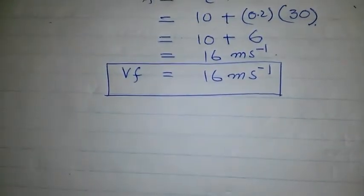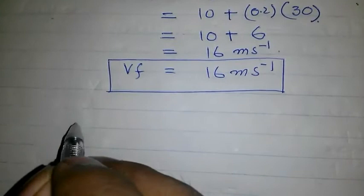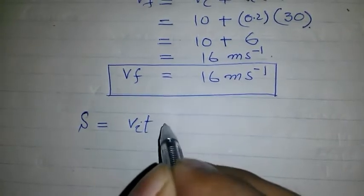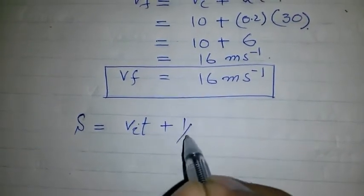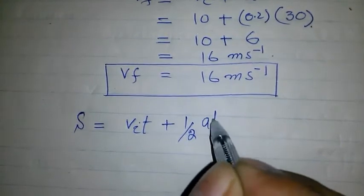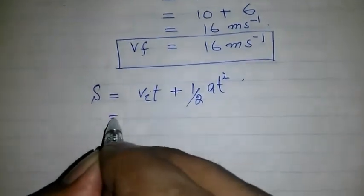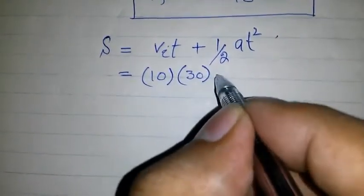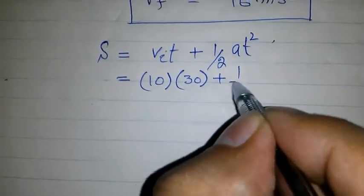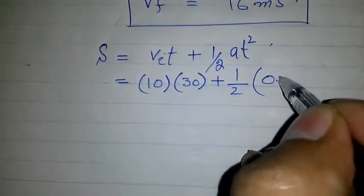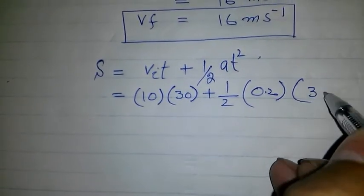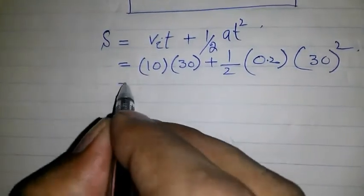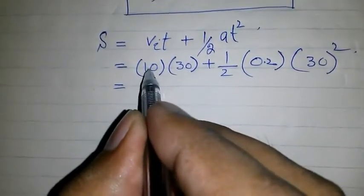Now we use the second equation of motion. S is equal to Vi t plus half a t squared, which is equal to 10 into 30 plus 1 over 2 into 0.2 into 30 squared.